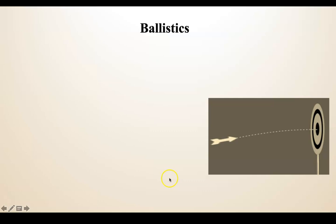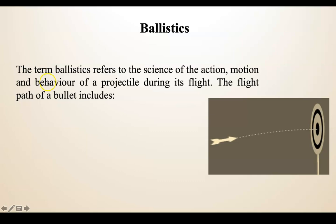The term 'ballistics' refers to the science of action, motion, and behavior of a projectile. A projectile can be anything — in older days, the arrow worked as a projectile and the bow worked as a firearm. Even a stone thrown in the air is a projectile. Anything that can be hurled with a certain force in any medium is called a projectile. Ballistics describes how the projectile behaves and acts according to its motion during its flight.